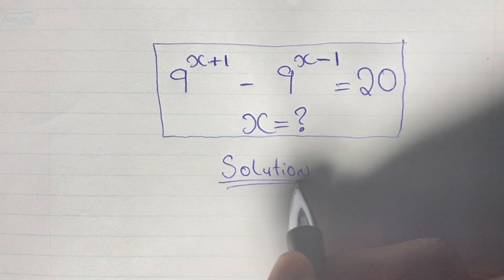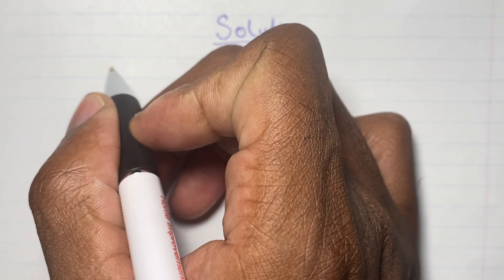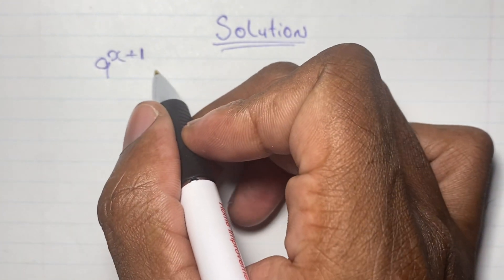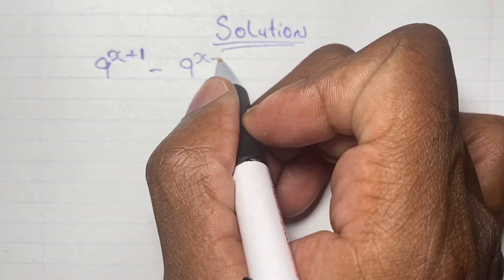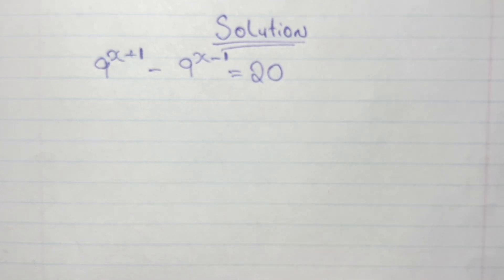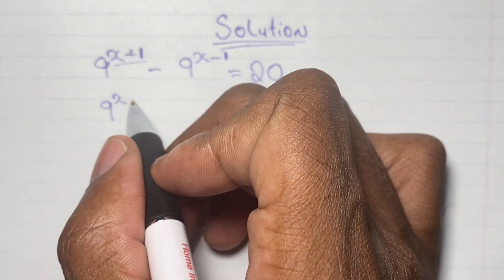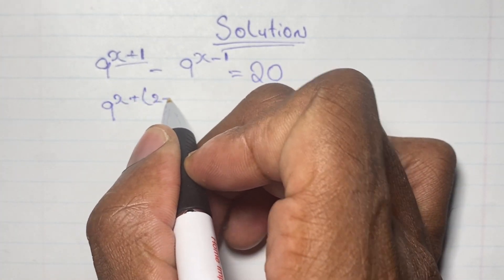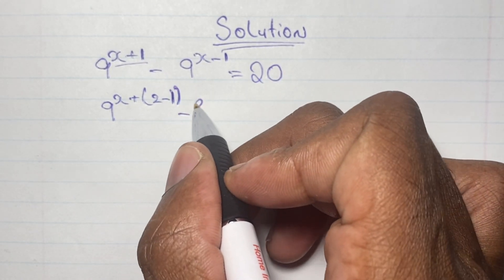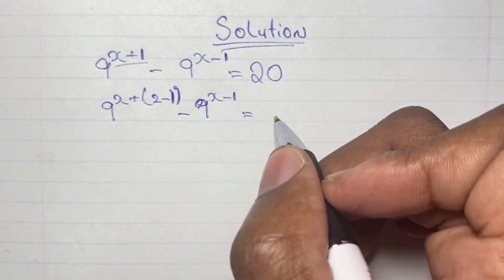I'll write my solutions down below here. Our equation is 9 to the power of x plus 1 minus 9 to the power of x minus 1 is equal to 20, and we are going to find the value of x. To start solving, we can do a little simplification where the exponent x plus 1 can be rewritten as x plus the bracket 2 minus 1, and then we rewrite 9 to the power of x minus 1, all equal to 20.